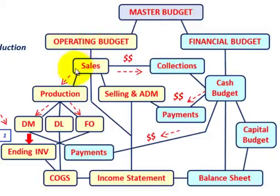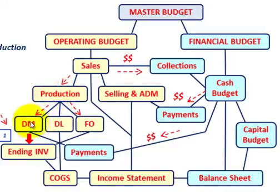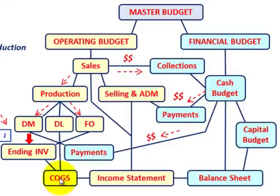Under the operating budget, we set up our sales budget first. Knowing our sales budget, we can determine our production budget and selling and administrative budget. From the production budget, we determine our direct materials, direct labor, and factory overhead budgets. Once we know those, we can determine our ending inventory budget, which feeds into cost of goods sold and ultimately the income statement budget.